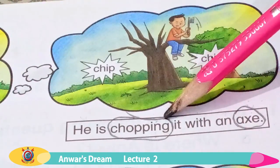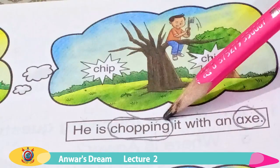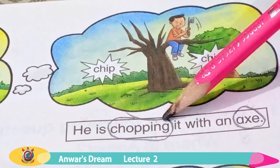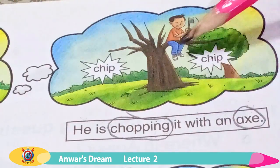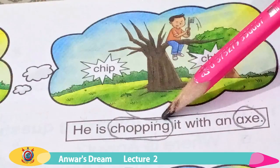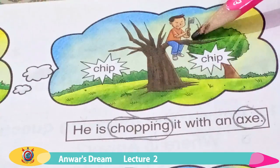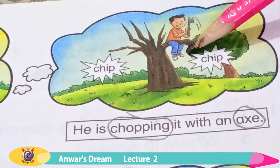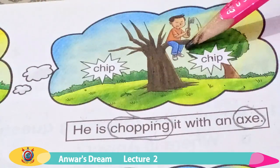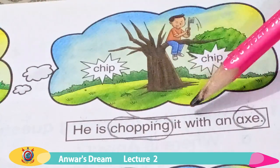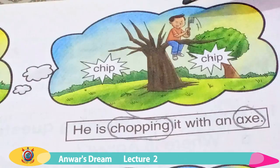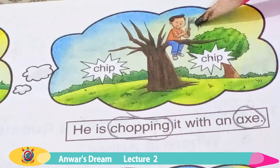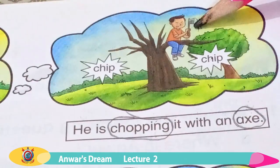Do you know, students, what is chopping? Kaatna. Anwar branch ko kaat raha hai — with an axe.